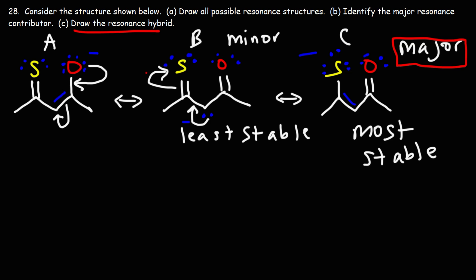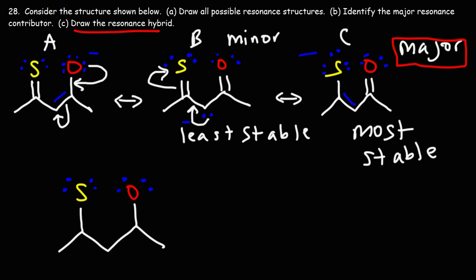Now, what about part C? Draw the resonance hybrid. Let's draw the things that don't change. Sulfur will have at least two lone pairs, and oxygen will have at least two lone pairs. The double bond can be here, here, or here — so the pi electrons are free to move in this region.